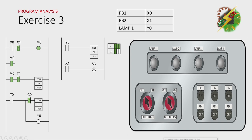And because of that, T1 will not be activated anymore — it means the cycle will stop. And Y0 will remain turned on. And the only way to turn off the lamp is by pressing PB2.